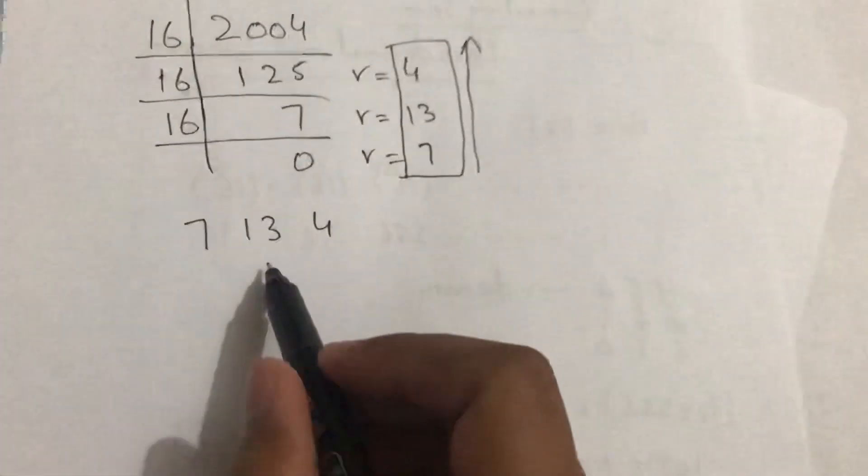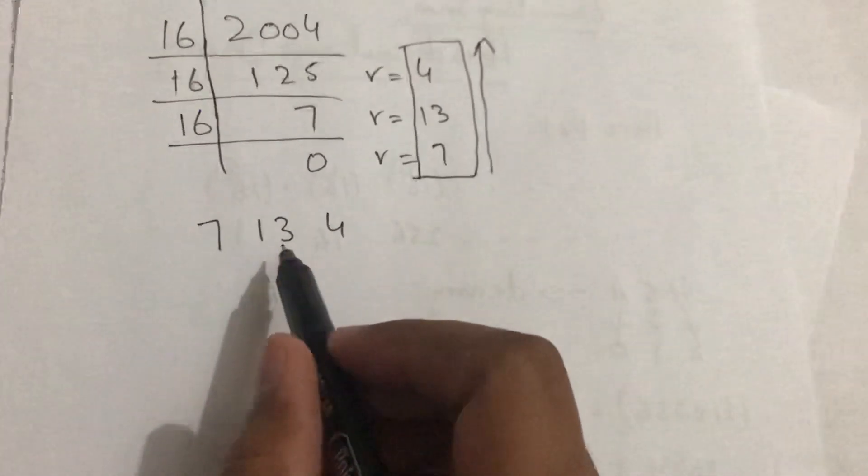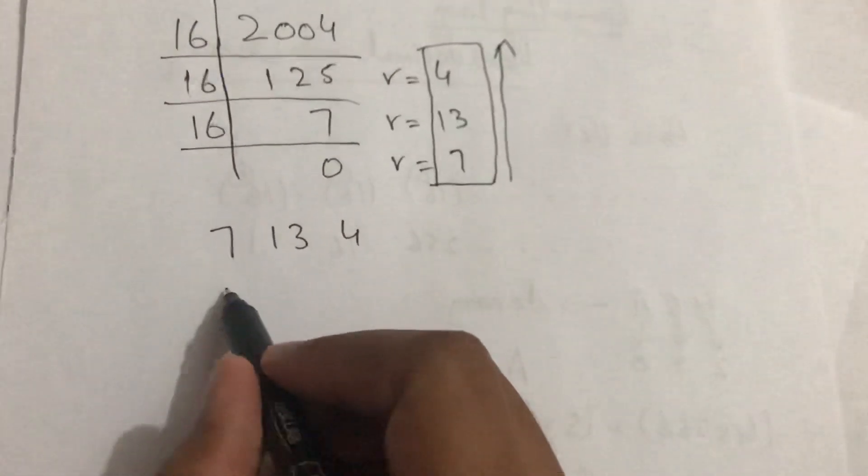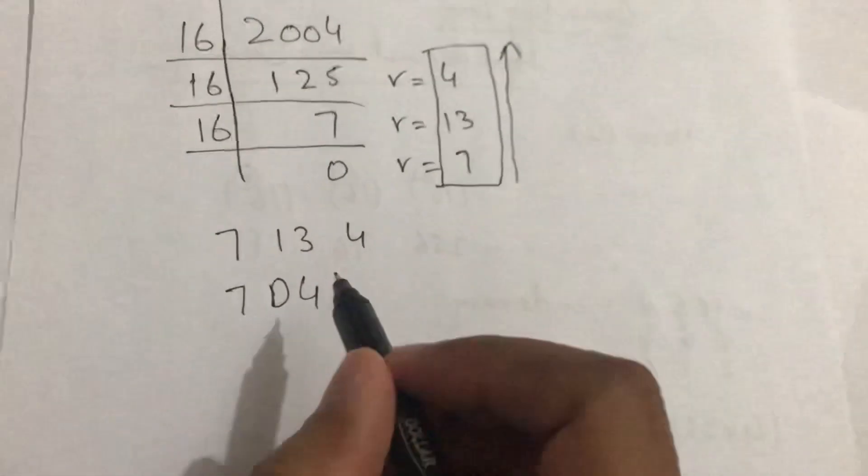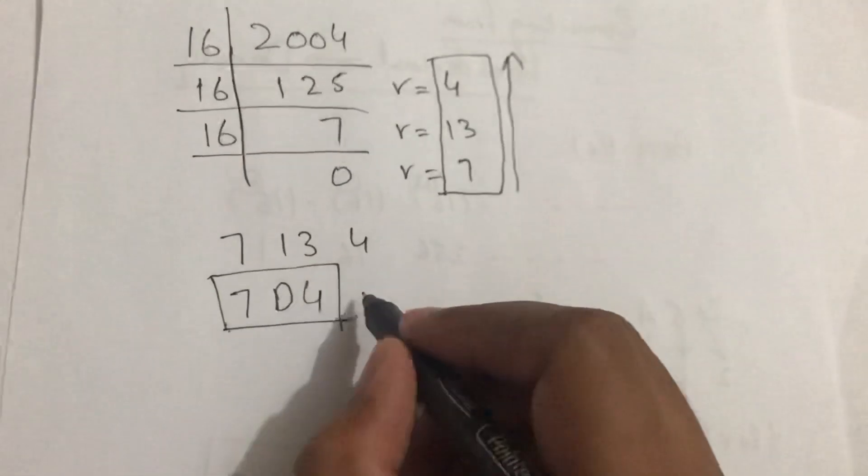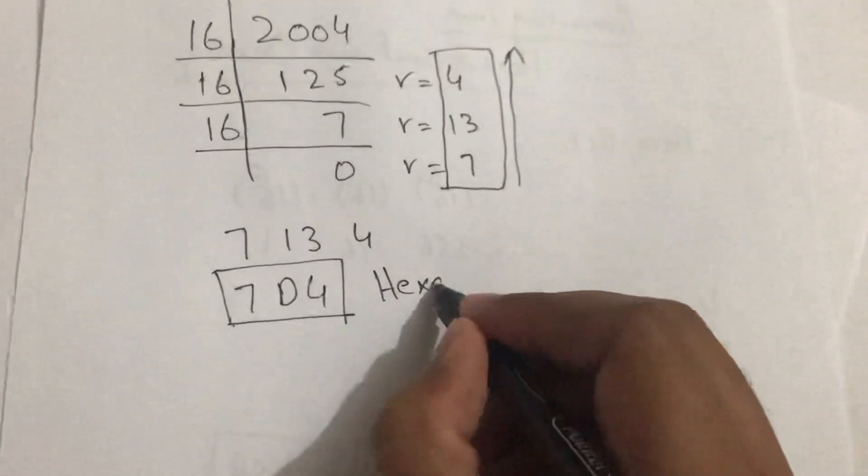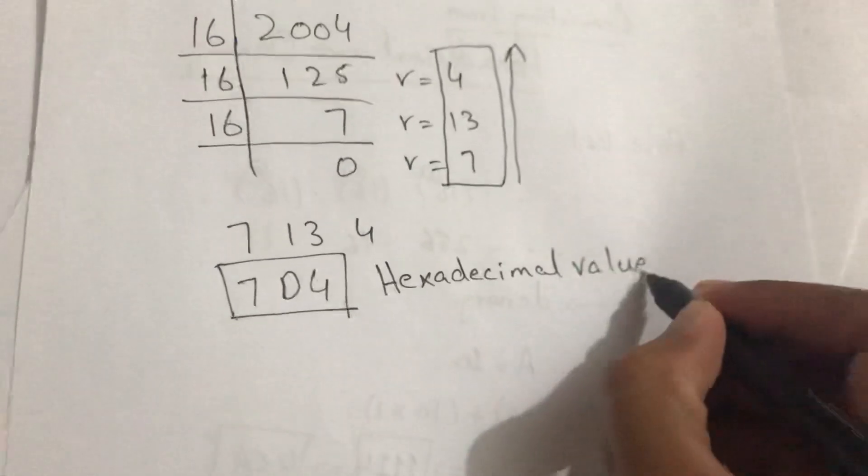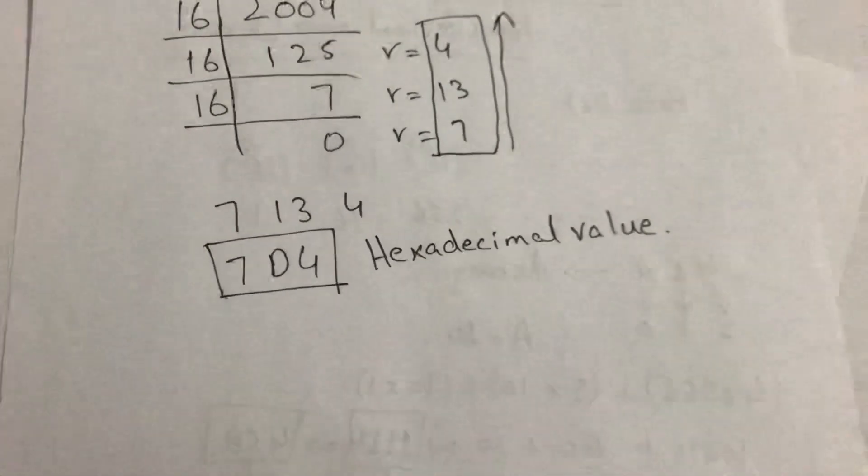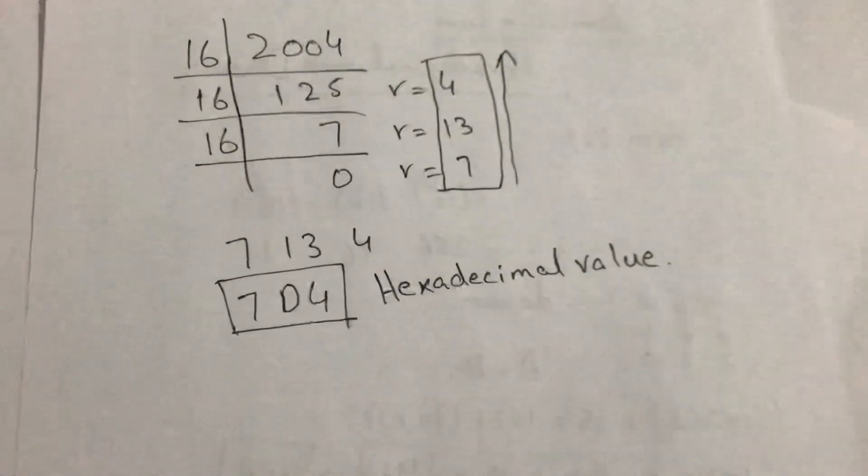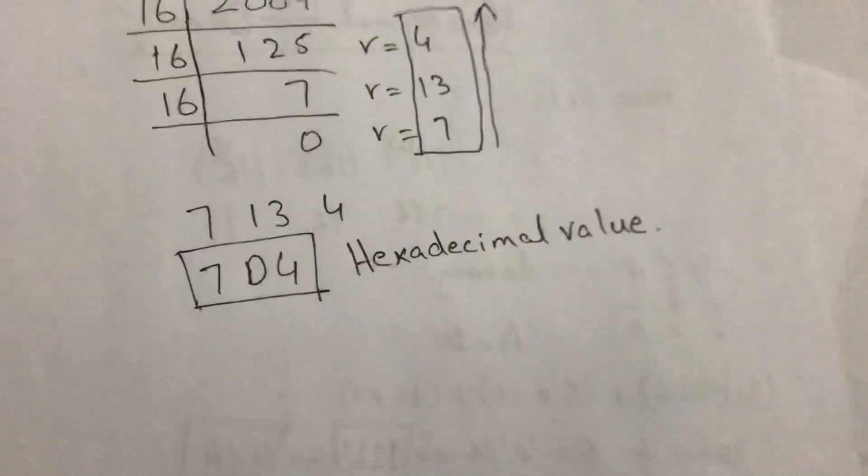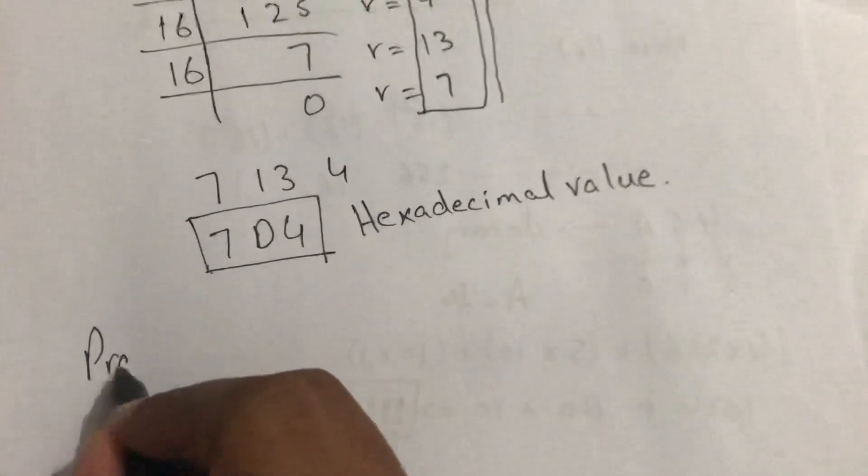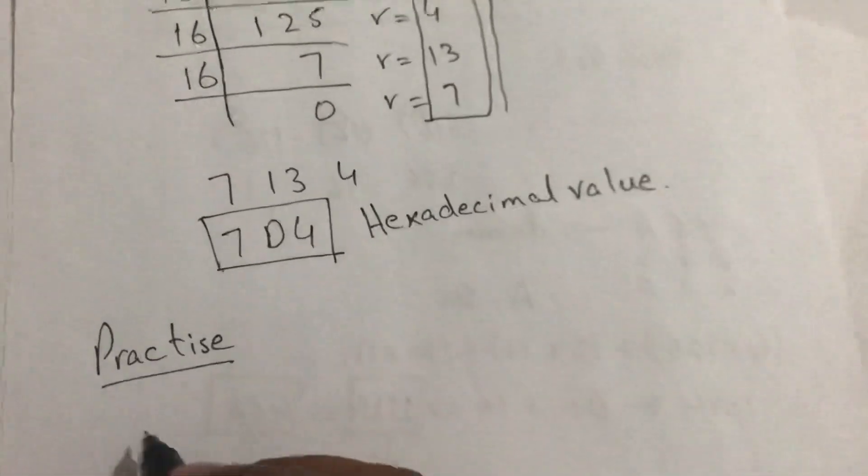So our final converted value will be 7D4. This is our hexadecimal value. So for your practice, you have to solve a problem.